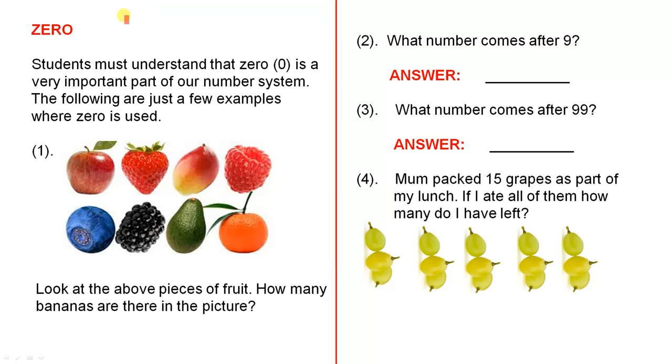This is a very important number in our number system, and we really need to understand that. Let's have a look at some examples where 0 is very important. Students must understand that 0, that's how you write it, is a very important part of our number system. The following are just a few examples where 0 is used.